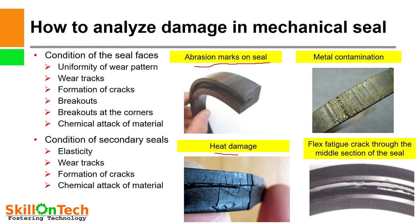Heat damage to the seal from excessive temperature results in hardening of the elastomer, which can cause permanent deformation, discoloration, cracking, and material breaking off. Flex fatigue — fracturing and deformation of the seal under pressure — creates tensile stresses that can fatigue and fracture the seal material.